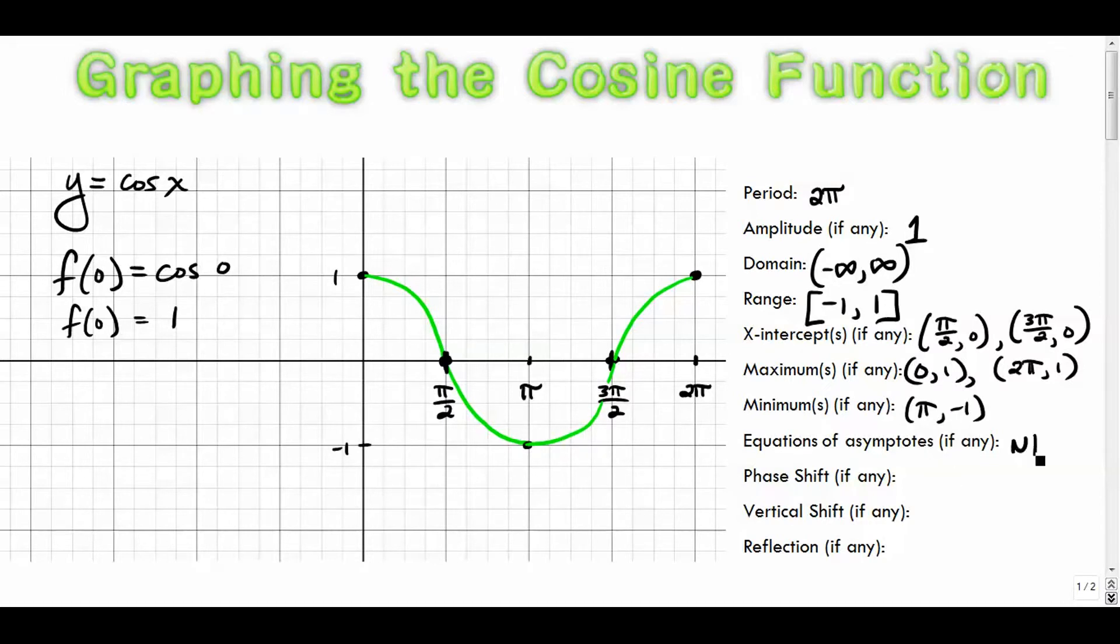There are no asymptotes. We'll get to that in the tangent, which is next. And there are no phase shifts, vertical shifts or reflections right now. We'll get to those soon.